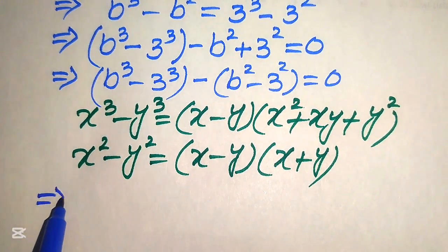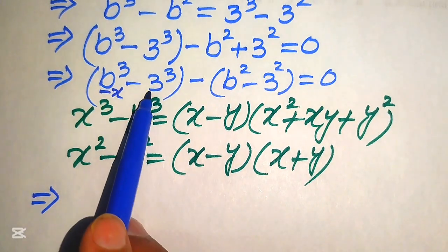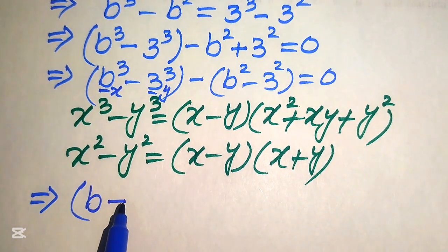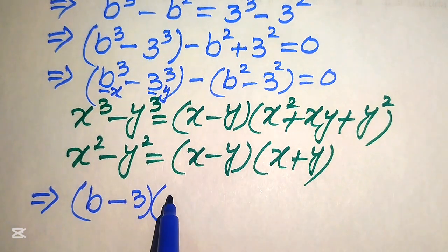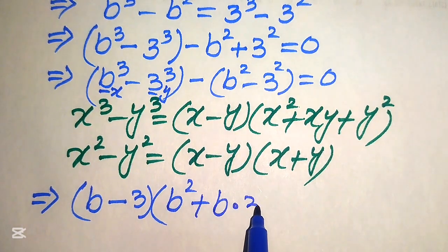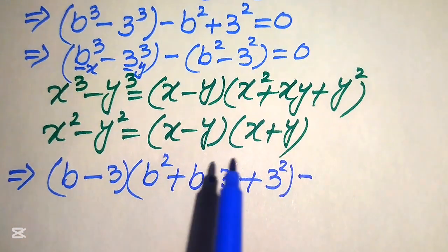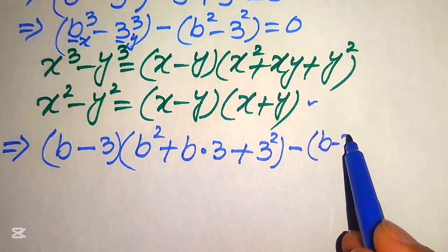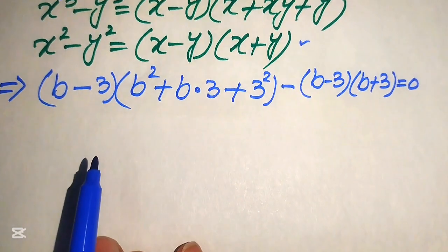Applying the difference-of-cubes formula with x equal to b and y equal to 3, the first factor becomes b minus 3, times b squared plus 3b plus 9. Applying the difference-of-squares formula, the second factor becomes b minus 3, times b plus 3. The whole equation equals 0.